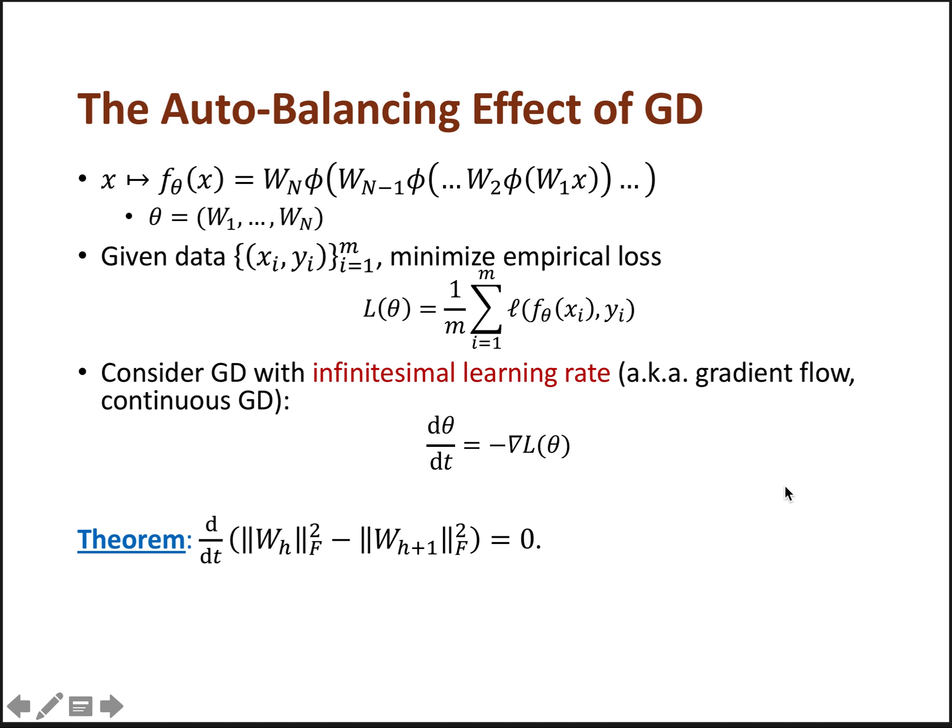And here comes our main theorem. We show that if we run gradient flow, the difference between the squared Frobenius norms of two layers will remain unchanged over time. So mathematically, this just says that its derivative with respect to time is exactly zero.